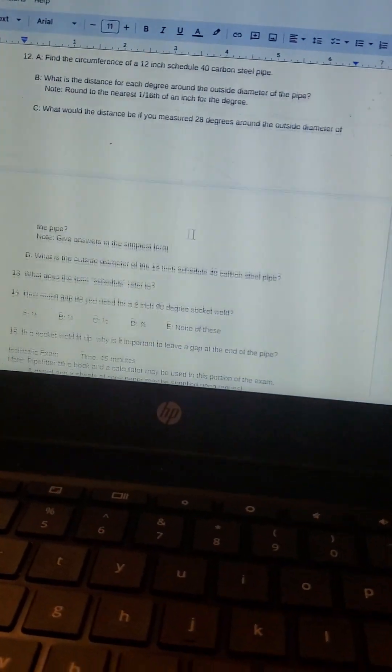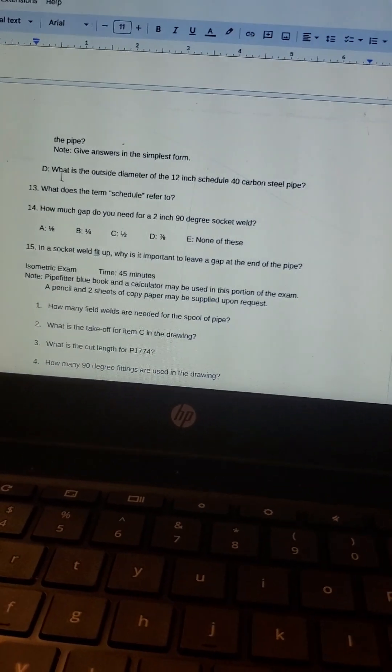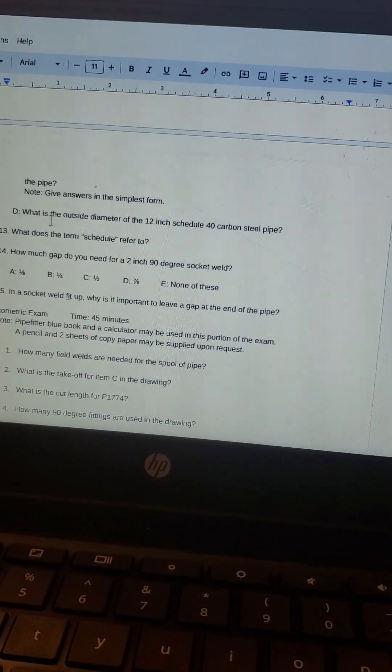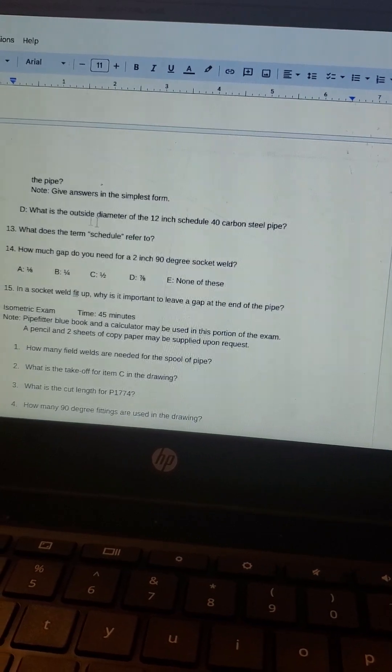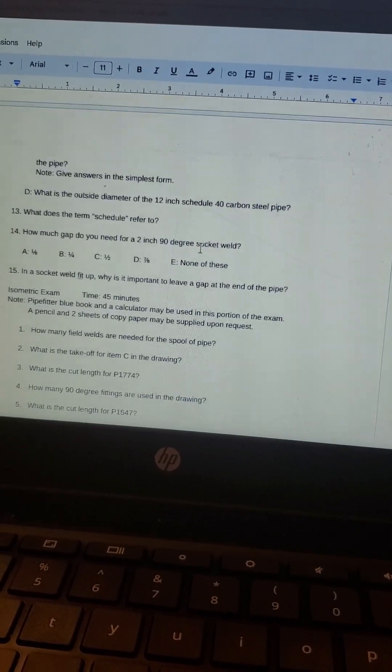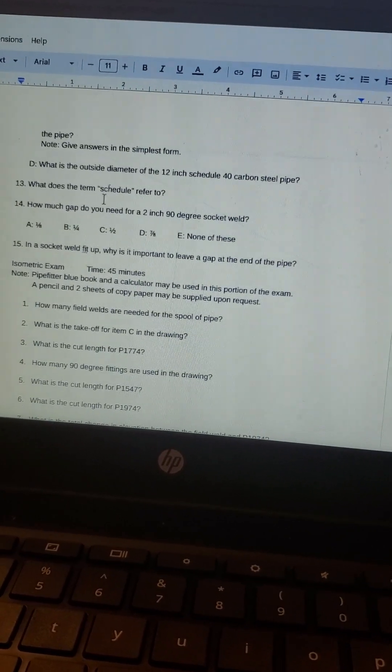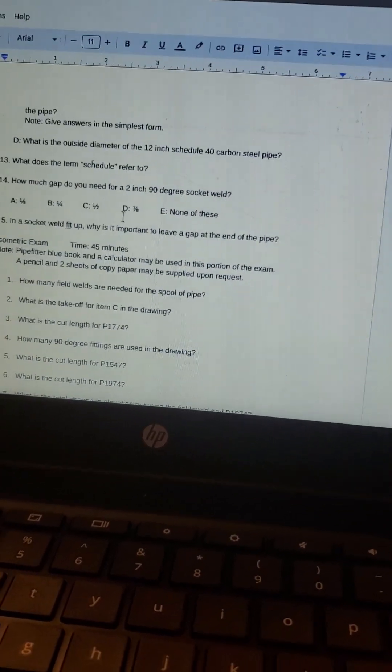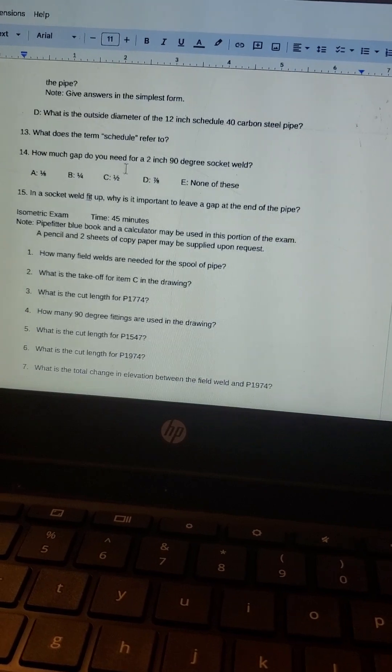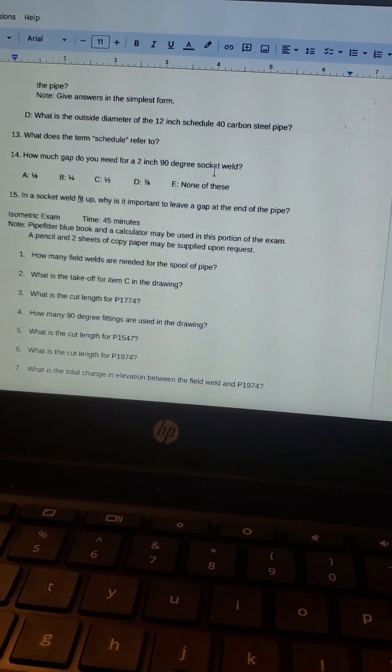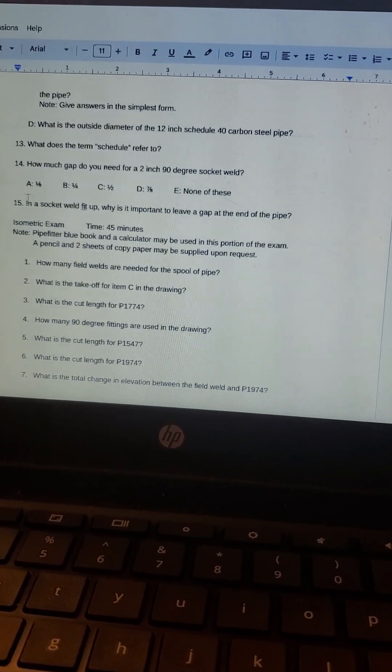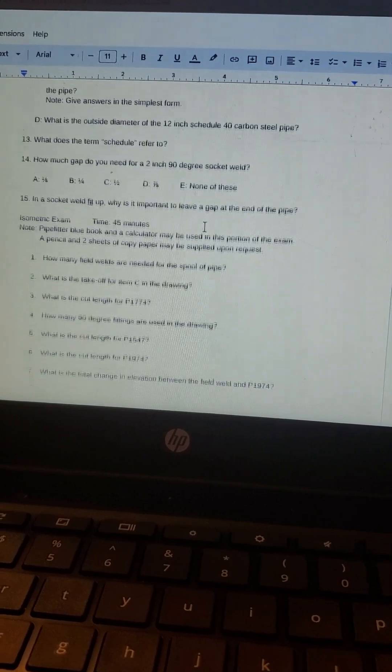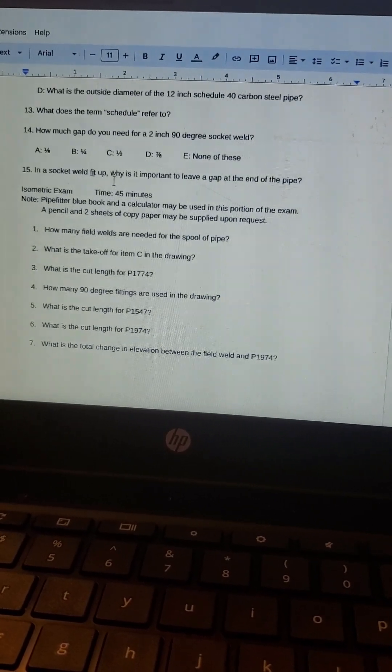Then it says on D, what is the outside diameter of the 12 inch schedule 40 pipe? So that'd be 12 and three quarters. What does the term schedule refer to? That's the thickness of the pipe wall. How much gap do you need for a two inch 90 socket weld? That would be about an eighth of an inch.